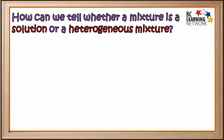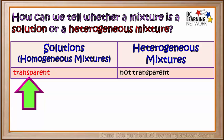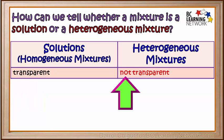How can we tell whether a mixture is a solution or a heterogeneous mixture? So far, we know that solutions are usually transparent, but heterogeneous mixtures are not transparent. We'll add these to a table we're making.